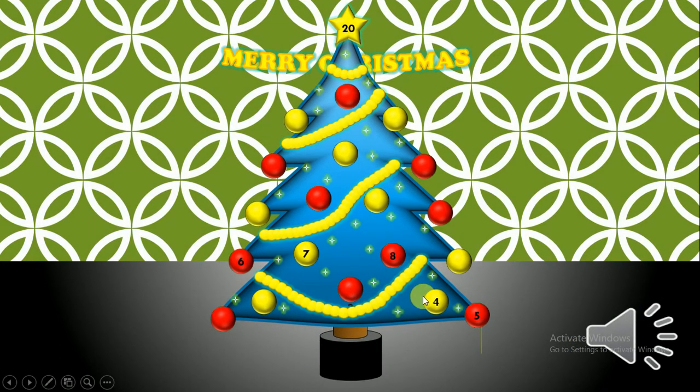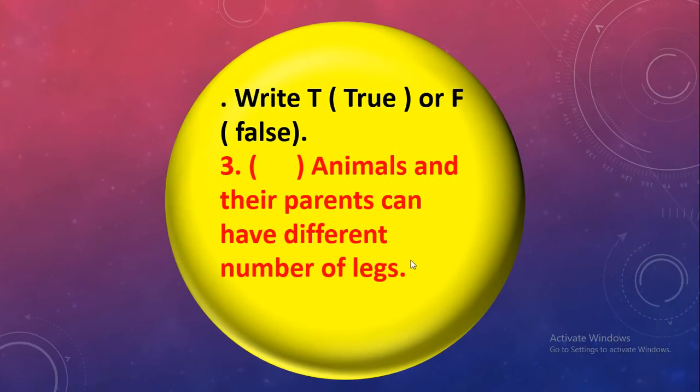Number 4. Animals and their parents can have different number of legs. Different number of legs? Parent have 4 legs and baby have 2 legs? No, false.